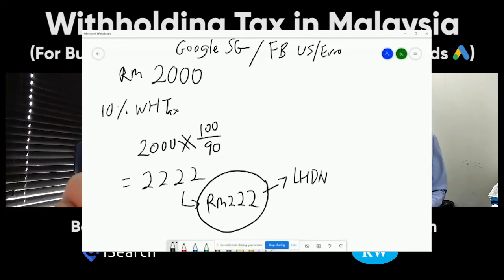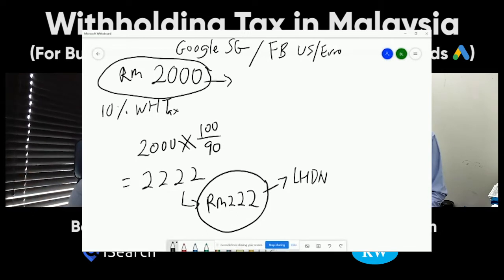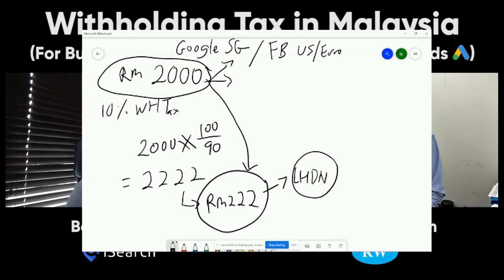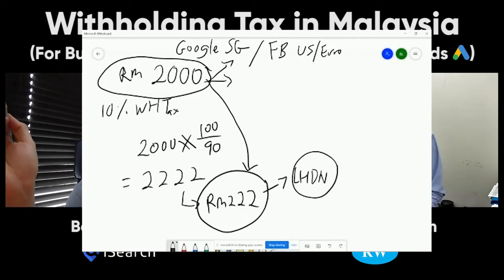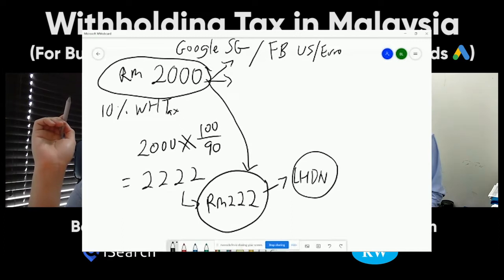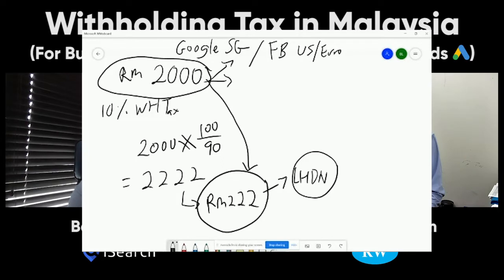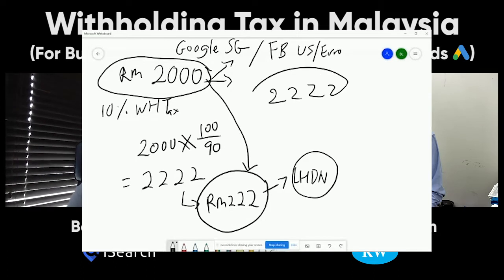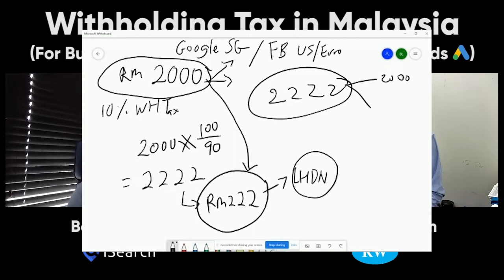So, correct me if I'm wrong — if a business spends 2,000 ringgit on Google or Facebook, they pay that 2,000 to Google or Facebook, and on top of that they also have to pay 222 to LHDN? Yes, you're right. So it increases the cost of doing business. They're not just spending 2,000 — they're spending 2,000 plus 222, for a total split payment of 2,000 to Google and 222 to LHDN. That's the correct calculation for withholding tax.